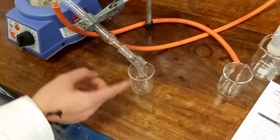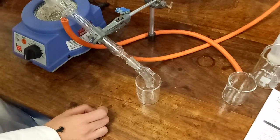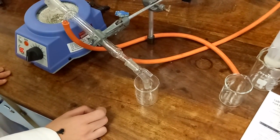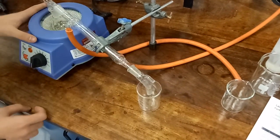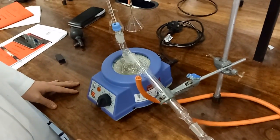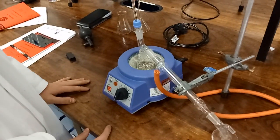You have a beaker to collect the liquid that comes from the condenser. This is the heating mantle, which allows you to boil your solution.